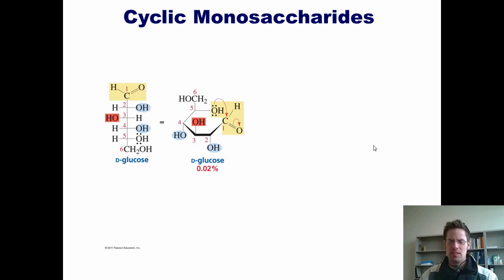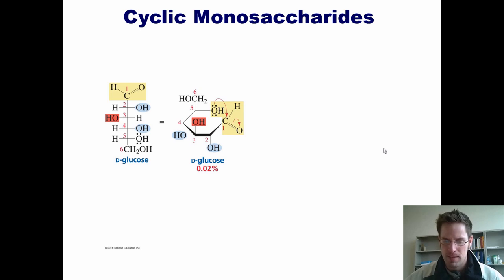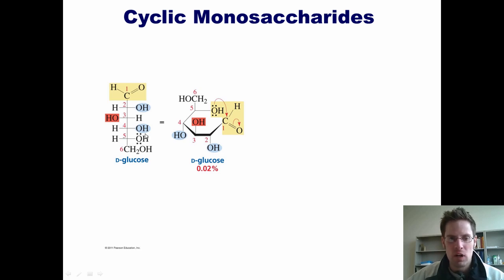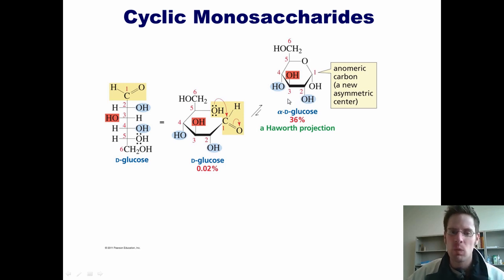Our text often depicts ring structures in a slightly different way from the traditional chair conformation. This other way of drawing ring structures, which is perfectly acceptable, is called a Haworth projection. Our book has this drawing of glucose shown here, and we can imagine once again the hydroxyl group dangling off of carbon 5 coming here, thrusting its electrons into the carbonyl carbon, having those electrons go up onto the oxygen, the O- then tearing a proton off of that OH, to give this ring structure. This is called a Haworth projection.